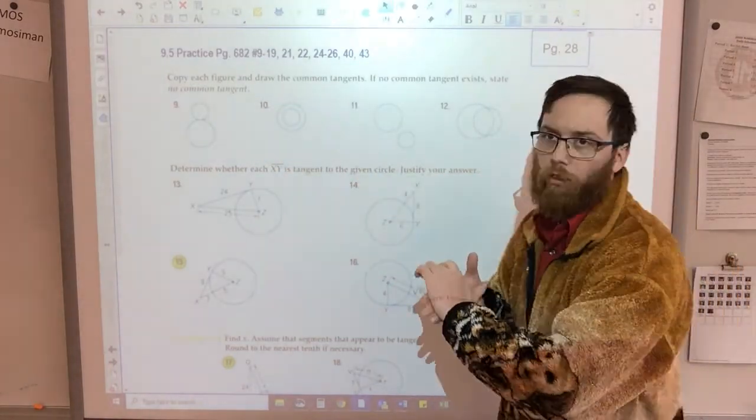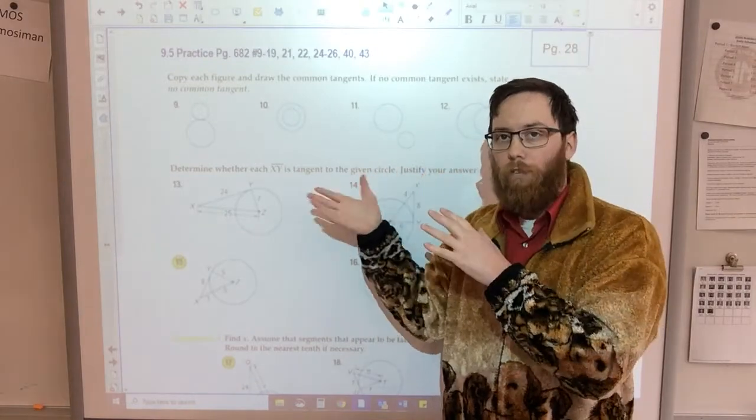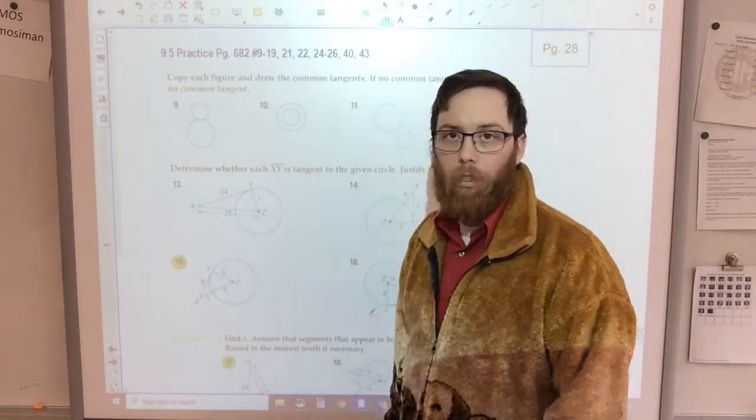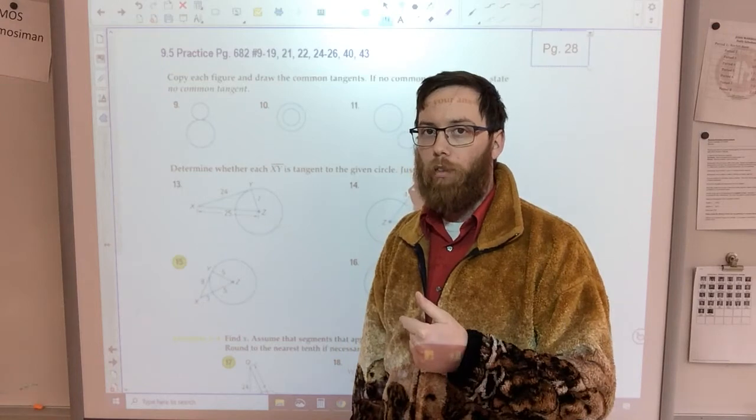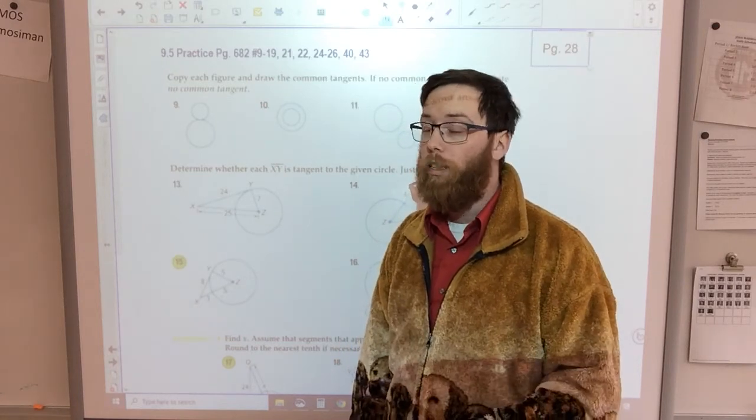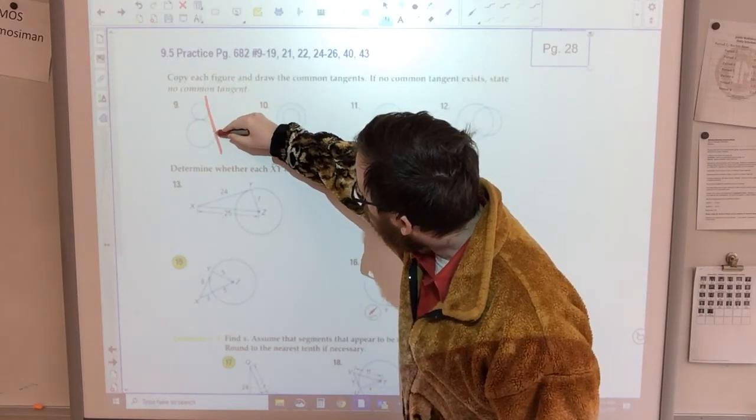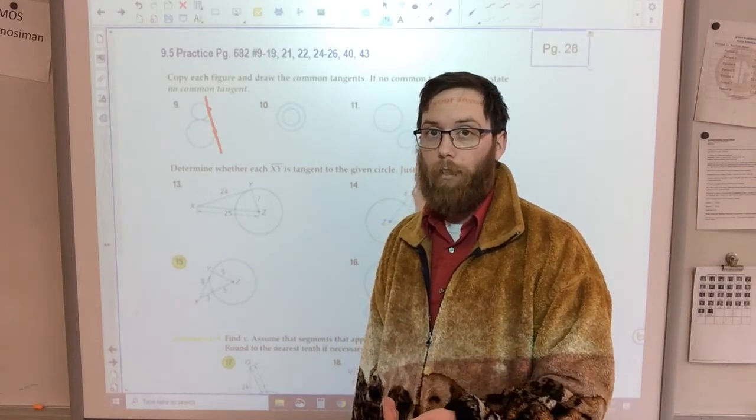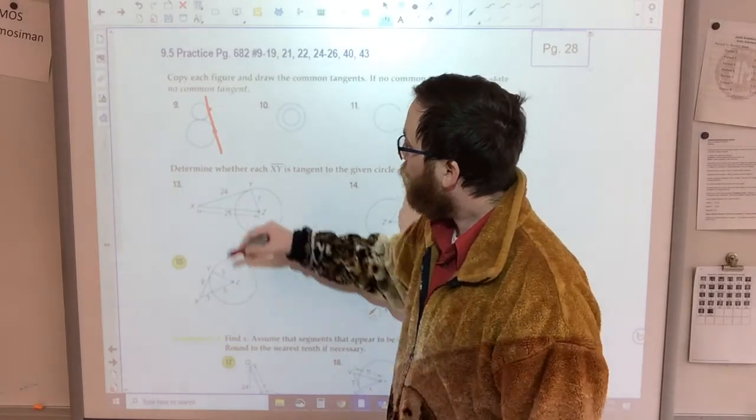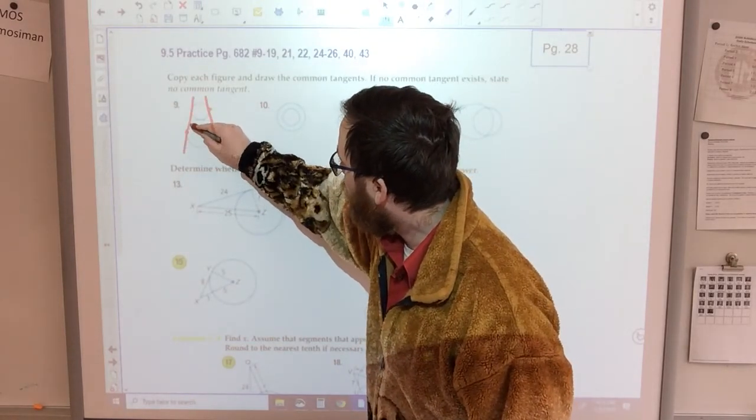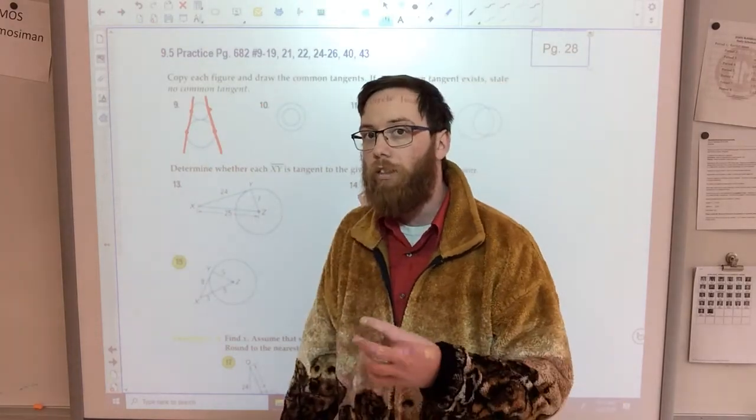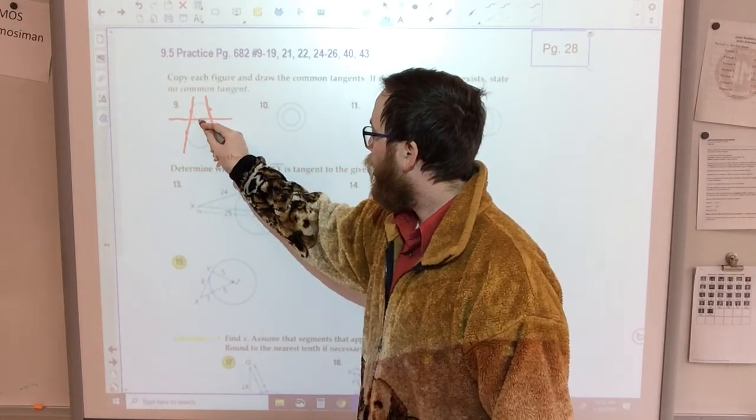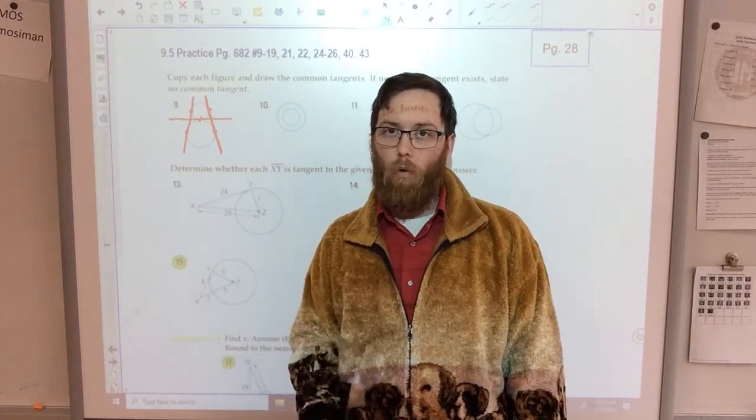It says copy each figure. You don't have to copy it, you have it, and if you printed this out you already have it. And then draw the common tangents. So that means what lines, if I were to draw next to these circles, would touch each circle once. Number 9, if I drew a line right here, this circle and this circle would be touched once by that tangent line. Therefore that tangent line is common between them. So that's one common tangent line. Here's another one. And then this figure also has one more common tangent line. So a line that touches both of them, it would go between them and touch that point once for the circle.